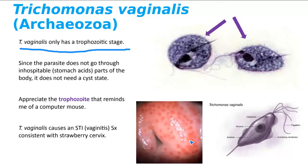I'll probably give you a hint on the practical — I'll say this looks like a mouse click-click. You're looking at an oval-shaped structure with a single nucleus, an axostyle — that's Trichomonas. It does not have a cyst state, only a trophozoitic state.